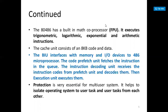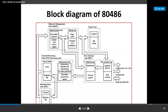The code prefetch unit fetches instructions into the queue. The instruction decoding unit receives the instruction code from the prefetch unit and decodes them, then the execution unit executes them. Protection is very essential for the multi-user system; it helps to isolate the operating system from user tasks. The architecture uses a five-stage pipeline: decode, code instruction queue, ALU, register file, and 8K cache.